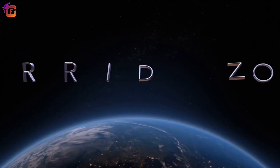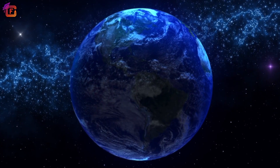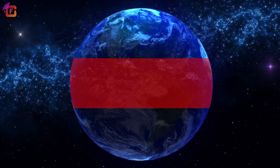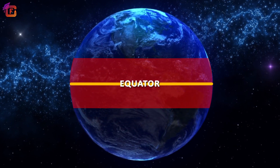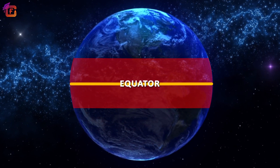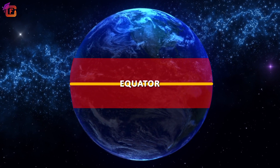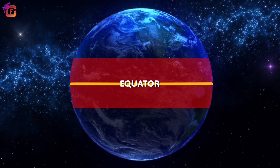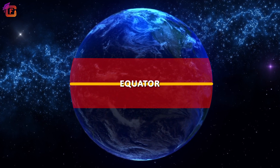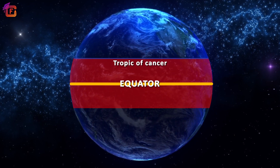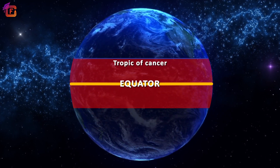Now, what is the torrid zone? The torrid zone is the area of the earth near the equator. It is generally the warmer zone of the earth. The torrid zone is basically the area of the earth between the Tropic of Cancer and the Tropic of Capricorn.